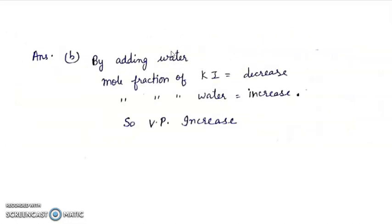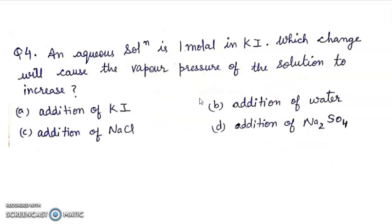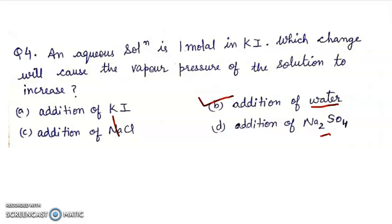By adding water, mole fraction of KI will decrease, mole fraction of water will increase. If we add water then vapor pressure will increase. KI, NaCl, and Na2SO4 are all solutes. The more solutes, the more vapor pressure decreases. The more water added, the more vapor pressure increases. So answer will be addition of water.